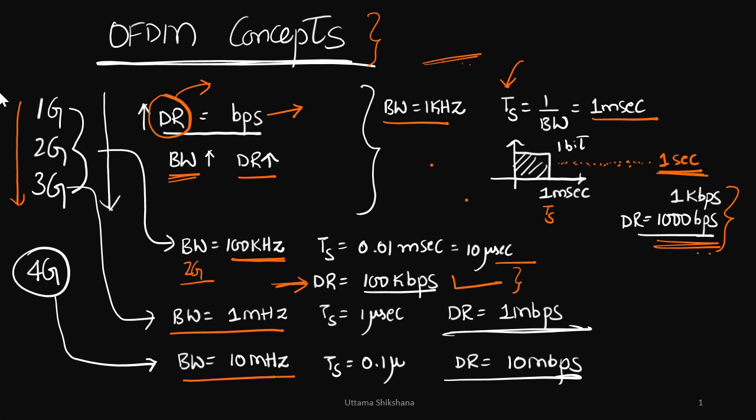Similarly, 3G 1 megahertz, we were able to get data rate of 1 mbps. They thought to increase the bandwidth for 4G system, so let's say 10 megahertz. In this case, symbol duration is 0.1 microseconds and we will get a good data rate which is 10x compared to 3G. But there was a problem, there was a huge challenge.